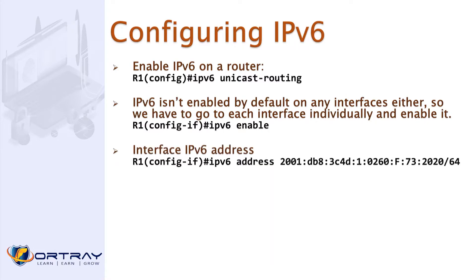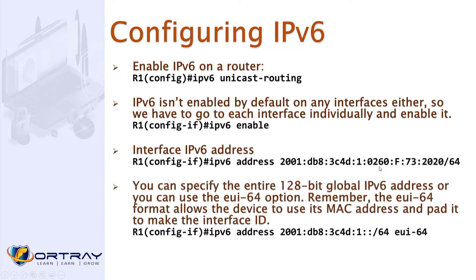Go into the interface and use the 'ipv6 enable' command. For IPv6 addresses, use 'ipv6 address' and assign the address in the appropriate format. You can specify the entire 128-bit global IPv6 address, or you can use the EUI-64 option. The EUI-64 format allows the device to use its MAC address and pad it into the interface IP.